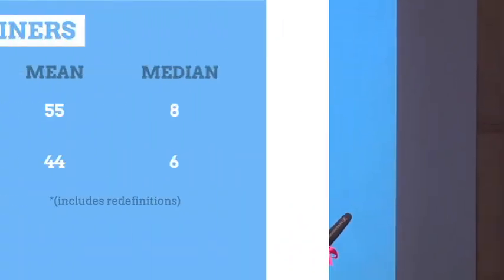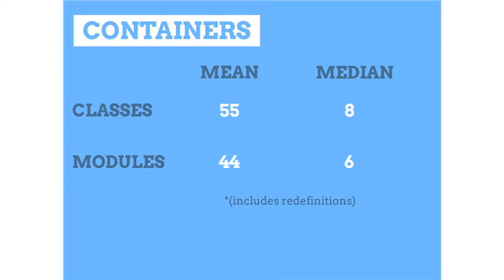Looking at containers: the numbers between how many classes and how many modules you have in a particular project — this also includes redefinitions. Popular projects have a lot more classes and modules, and the regular project tends to be a lot smaller. Same thing with methods — Rubyists tend to favor instance methods, which I think makes a lot of sense.